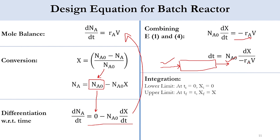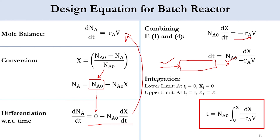Integrating the batch reactor equation with limits — at t = 0, X = 0; at t = t, X = X — we get the design equation: t = NA0·∫₀ˣ dX / (−rA·V). This is the final design equation for the batch reactor, expressed in terms of time.